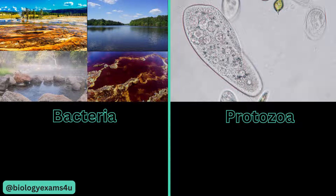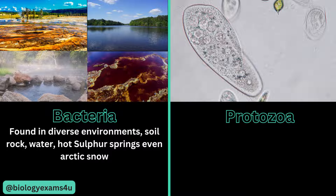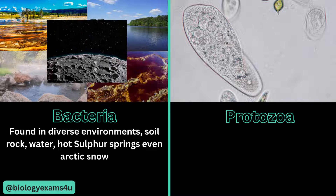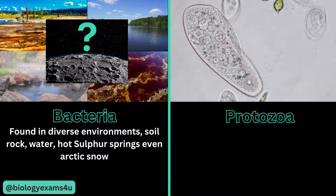Bacteria are found almost everywhere — they thrive in diverse environments including soil, rock, water, hot sulfur springs, and even Arctic snow. Bacteria that thrive at high temperatures are called thermophiles, and those that tolerate high salinity are called halophiles. Even in Moon or Mars exploration, when searching for signs of life, what we are actually looking for is the presence of bacteria, as they can possibly live in almost any condition.